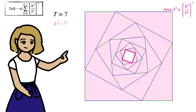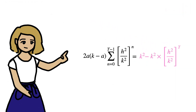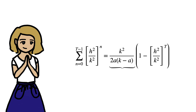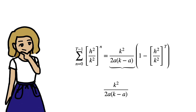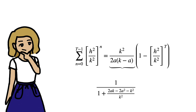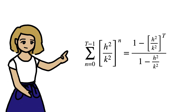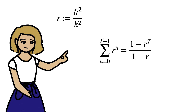The area of the white square is k squared times h squared on k squared to the power of t. So finally, we can equate these two expressions for the shaded area, and get the series on its own. That's looking pretty nice. Now, we can substitute in the simplified expression for h squared on k squared, and even encapsulate h squared on k squared in a new variable r, giving us this potentially familiar identity about partial geometric series.